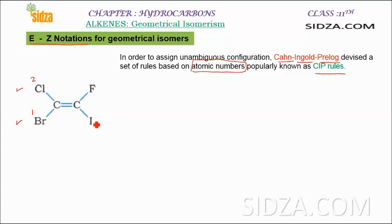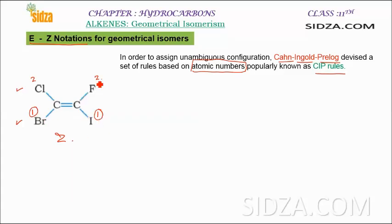If the highest priority groups are on the same side of a double bond, we use the term Z. If the highest priority groups are on the opposite side of a double bond, we use the term E. So in our example with fluorine, bromine, chlorine, and iodine: bromine is number one on one carbon, iodine is number one on the other carbon. If iodine and fluorine are on opposite sides, it would be called E.